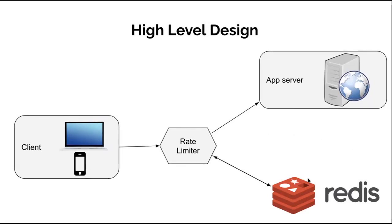The data flow is: the client sends a request to the rate limiter middleware. The rate limiter fetches the counter from the corresponding bucket in Redis and checks if the limit is reached. If the limit is reached, the request is rejected. If not, the request is sent to the API server, and the system also increments the counter and saves it back to Redis. The high-level design does not answer all questions — for example, how rate limiting rules are created, where rules are stored, and how to handle rate-limited requests.